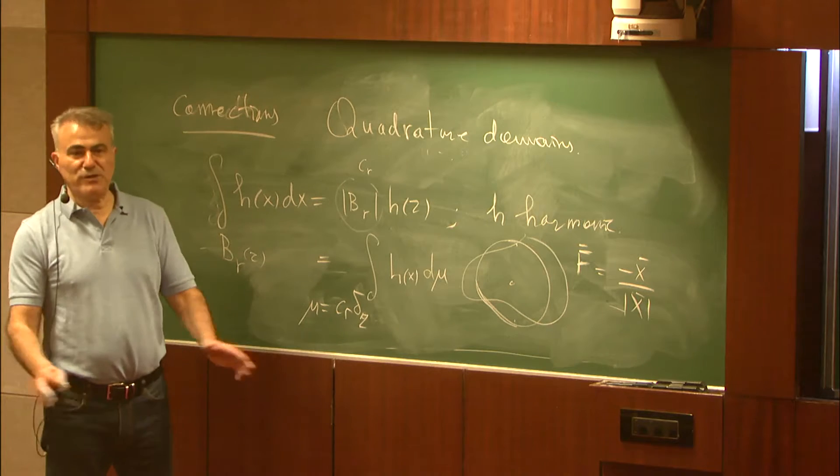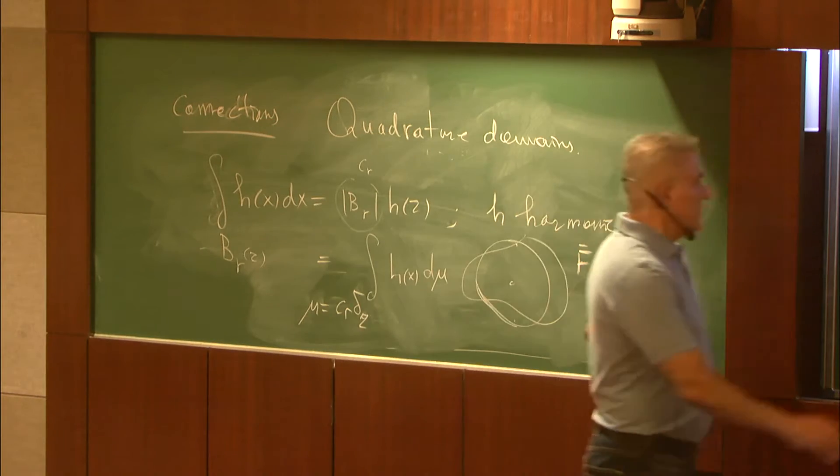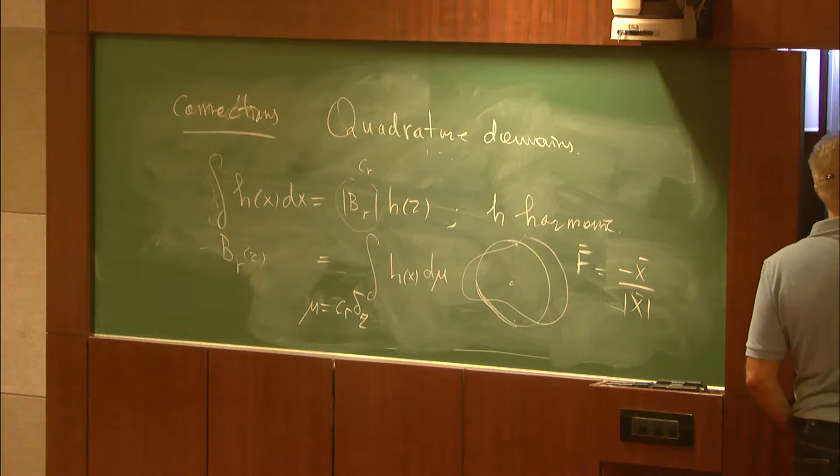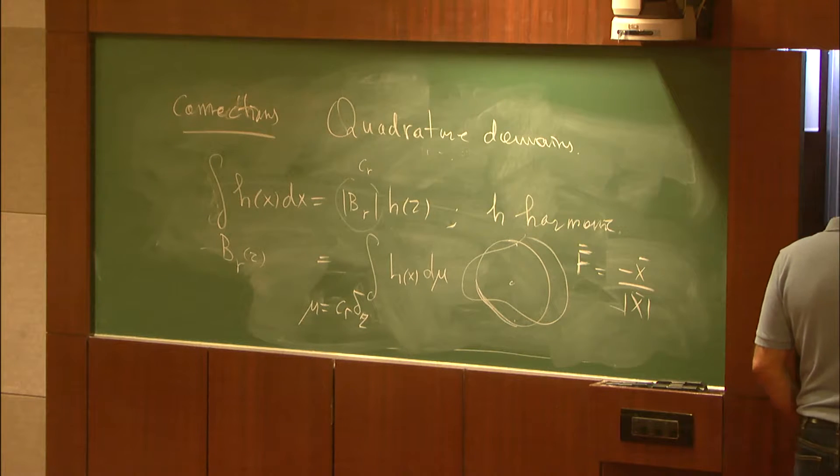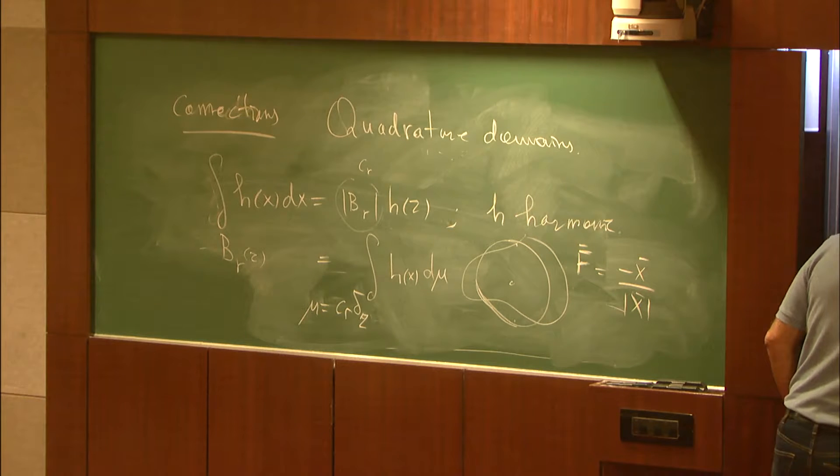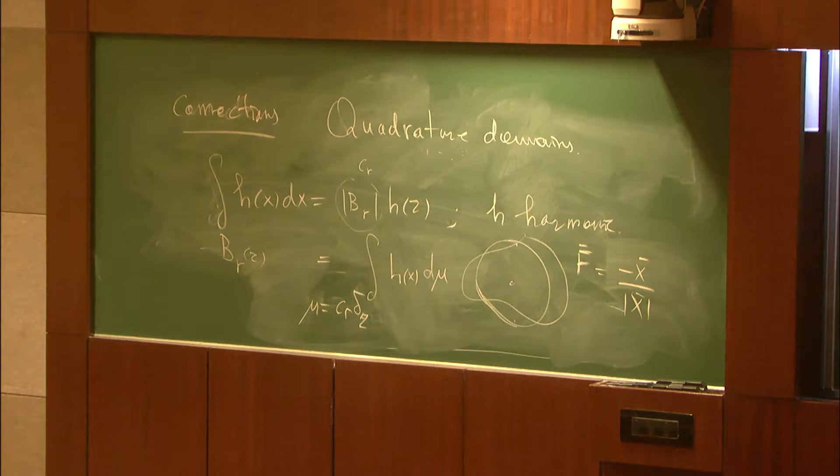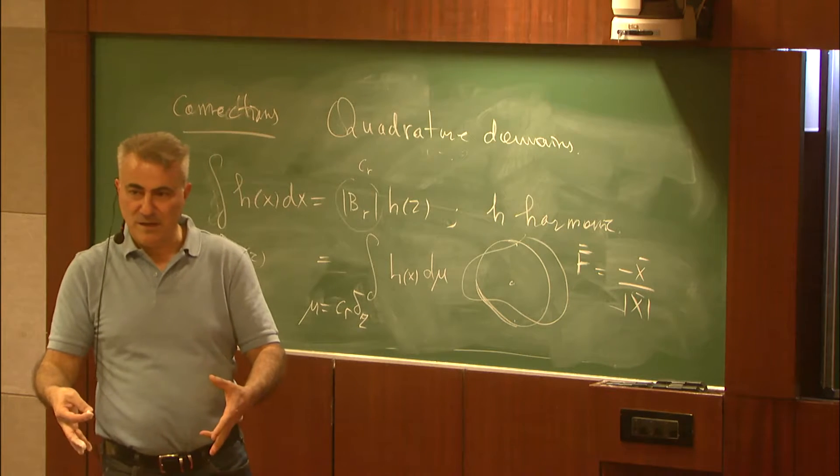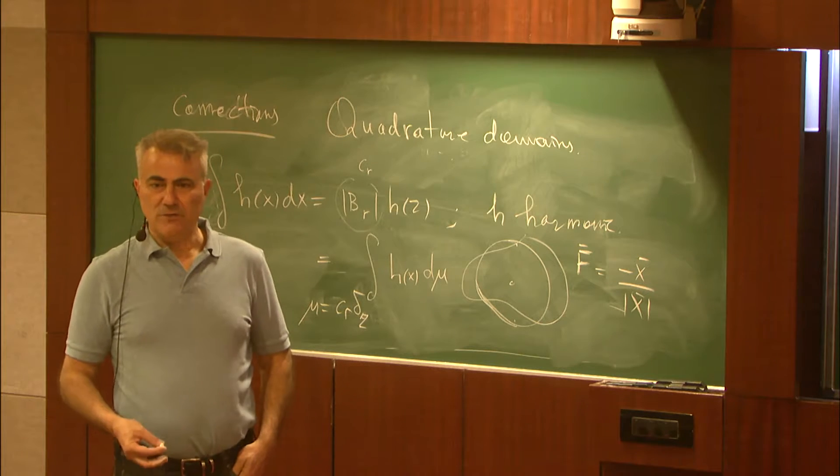I can rewrite this as integration of the harmonic function with respect to this measure, so that measure is exactly the Dirac mass up to this constant. So given a measure μ, we say omega containing support of the measure is a quadrature domain with respect to this measure if the integral over omega equals the integral with respect to the measure. If you can find the domain omega which contains the support and that integral identity holds, we call the domain a quadrature domain.